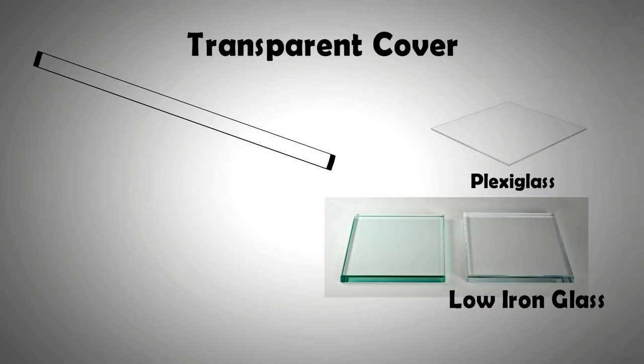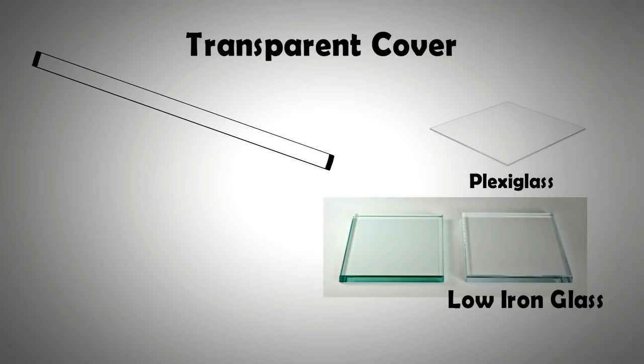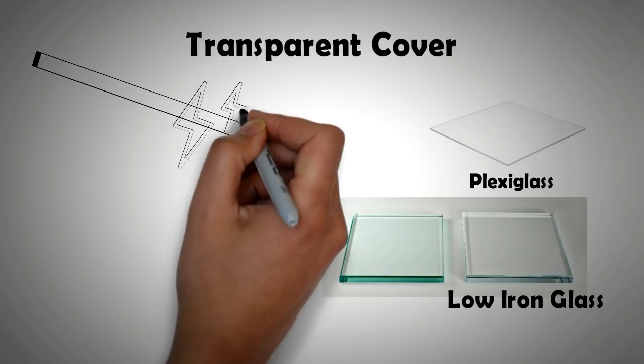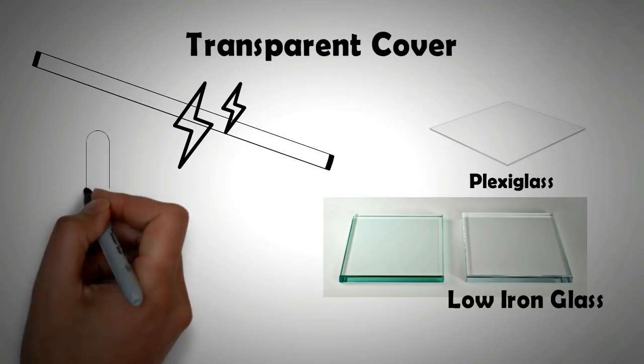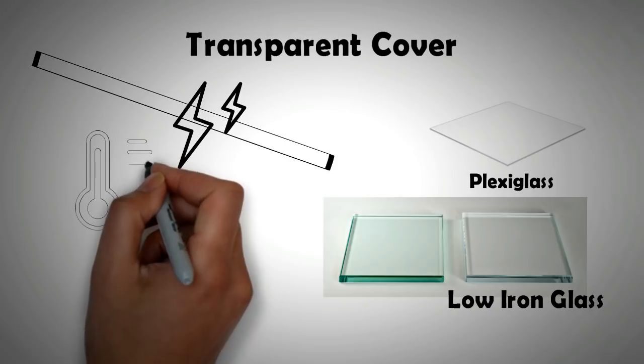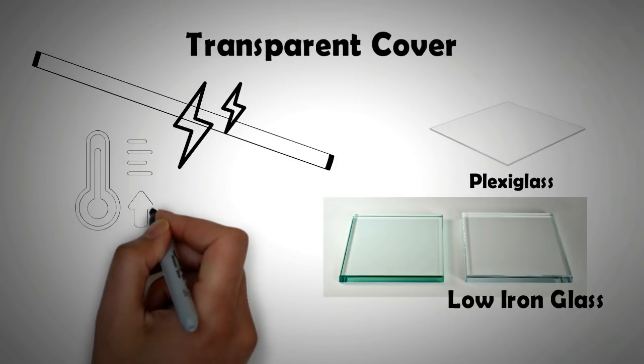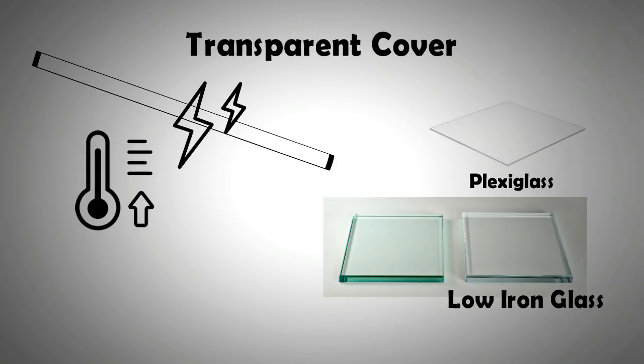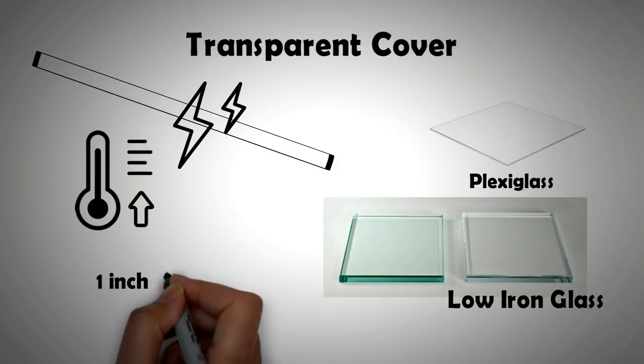The transparent cover serves two purposes: number one, it allows more solar radiation inside, and secondly it also blocks heat from getting away through greenhouse effect. Thus, the glass cover acts as a blanket for the absorber pipes, which can get really hot.